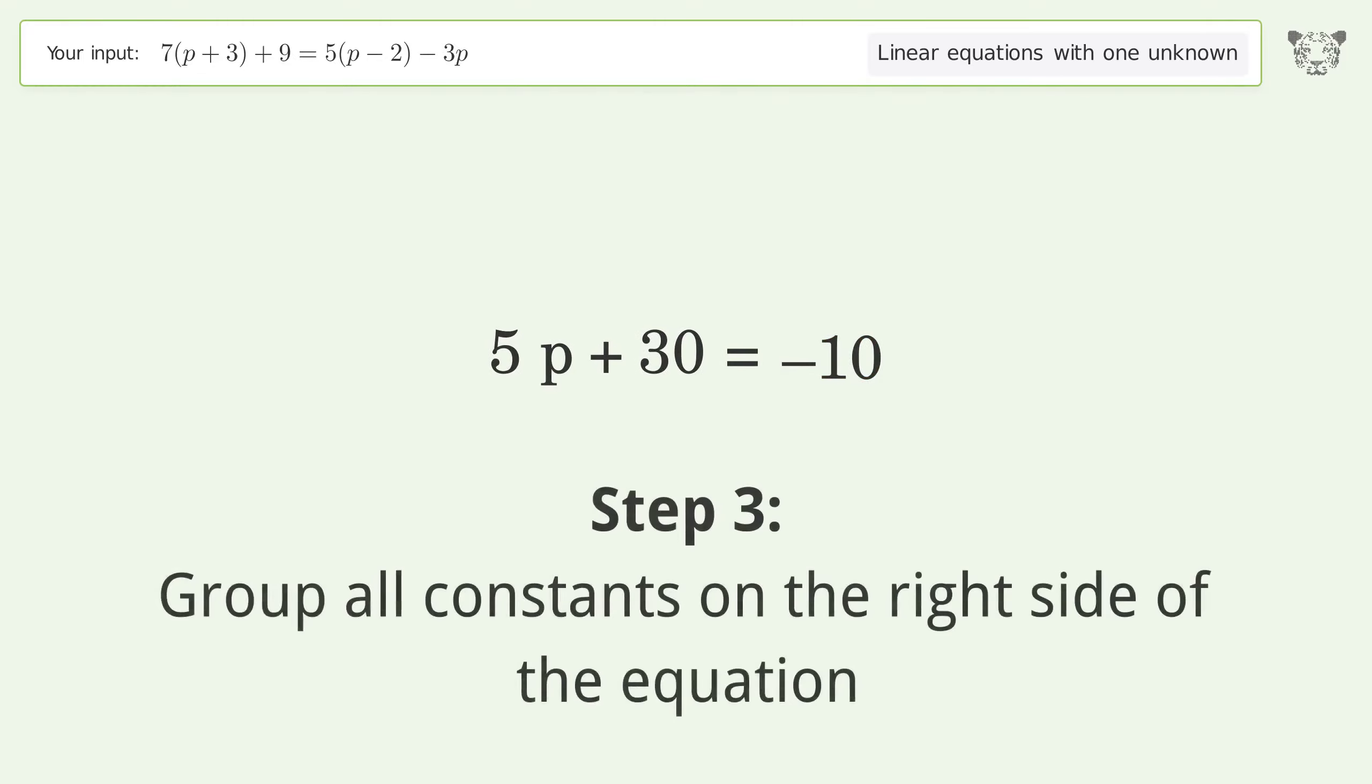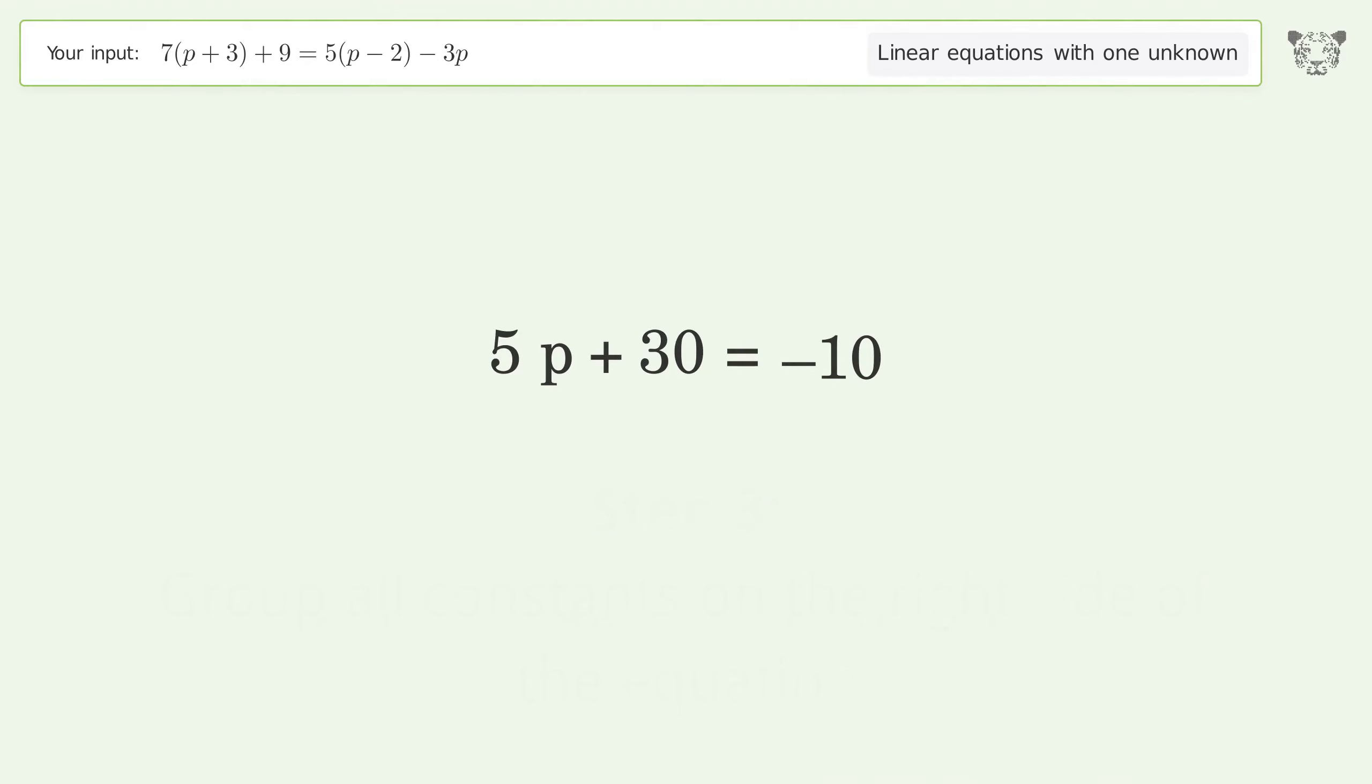Group all constants on the right side of the equation. Subtract 30 from both sides. Simplify the arithmetic.